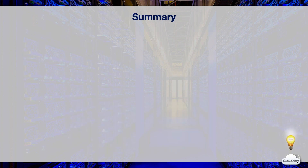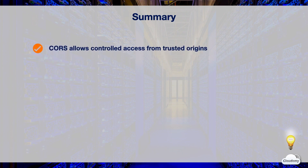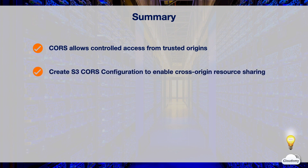In this episode, we've learned S3 cross-origin resource sharing. CORS enables web resources to allow controlled access from trusted origins. You can create an S3 CORS configuration to enable resource sharing from one S3 bucket to another bucket. That's all for S3 CORS. Thanks for watching and see you in the next episode.